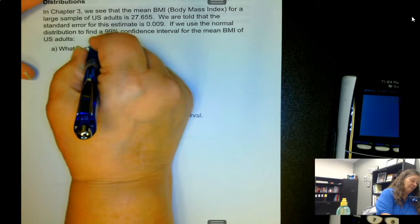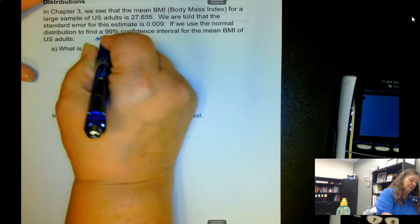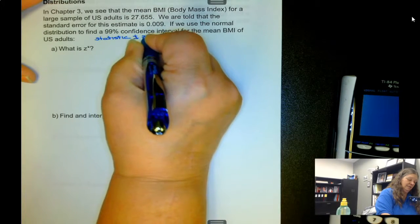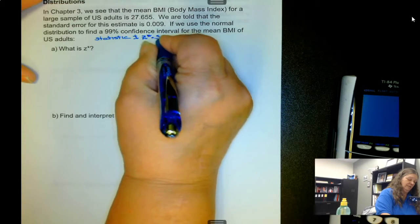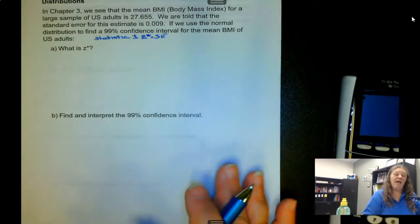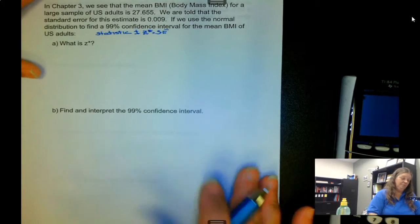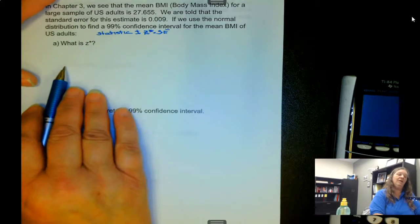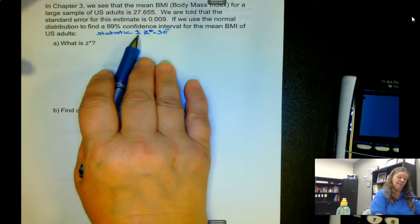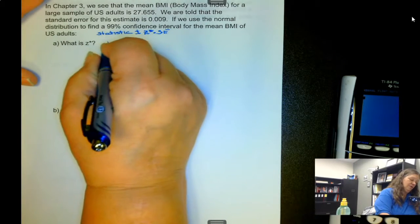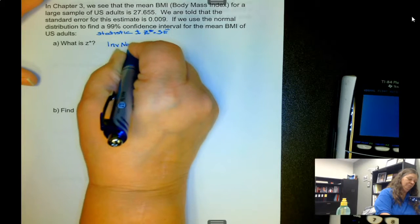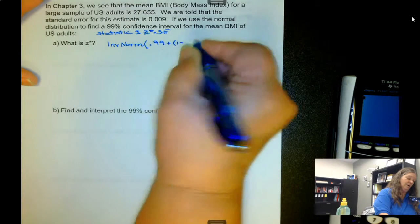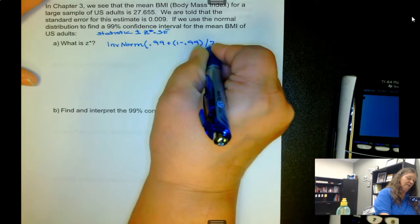Now remember, confidence interval is the statistic plus or minus z* times the standard error. Now we need to find z*. Basically, we're finding the endpoint, and it's for a 99% confidence interval. Remember that 99% is between the positive and the negative endpoint, hence the plus or minus.